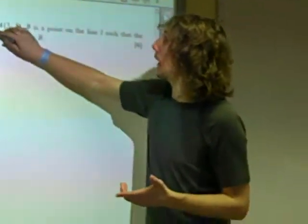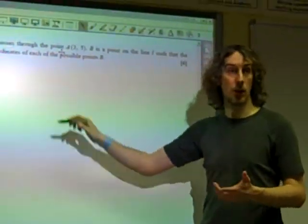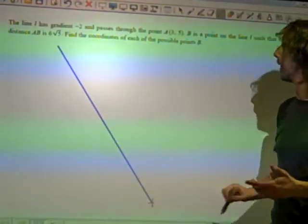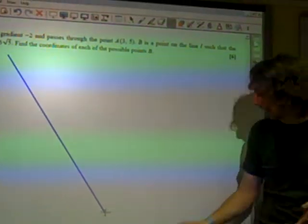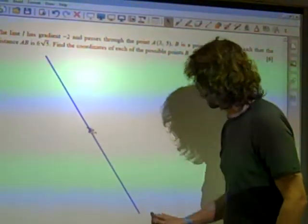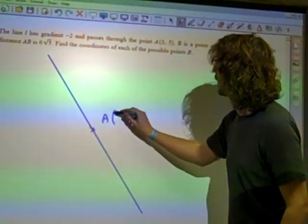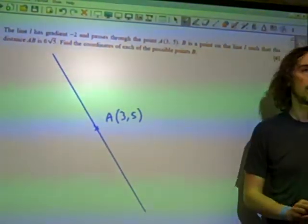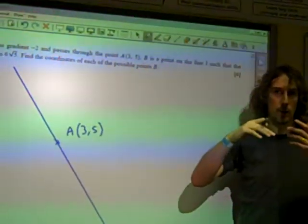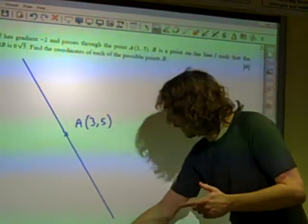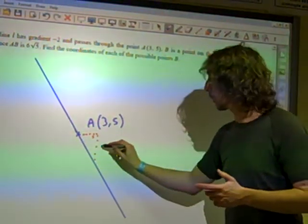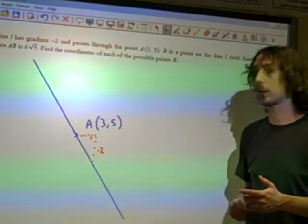If we go straight to a diagram, what we've got to go on is that we have a line of gradient minus 2. Now gradient minus 2 lines look something like that. And we have a point A with coordinates on the line, amazingly, with coordinates (3, 5). Now what we know about gradient is that the gradient tells you how far you go up or down for every one unit across. So on this line here, there is a little triangle that for every one unit across goes two units down, because the gradient is minus 2.